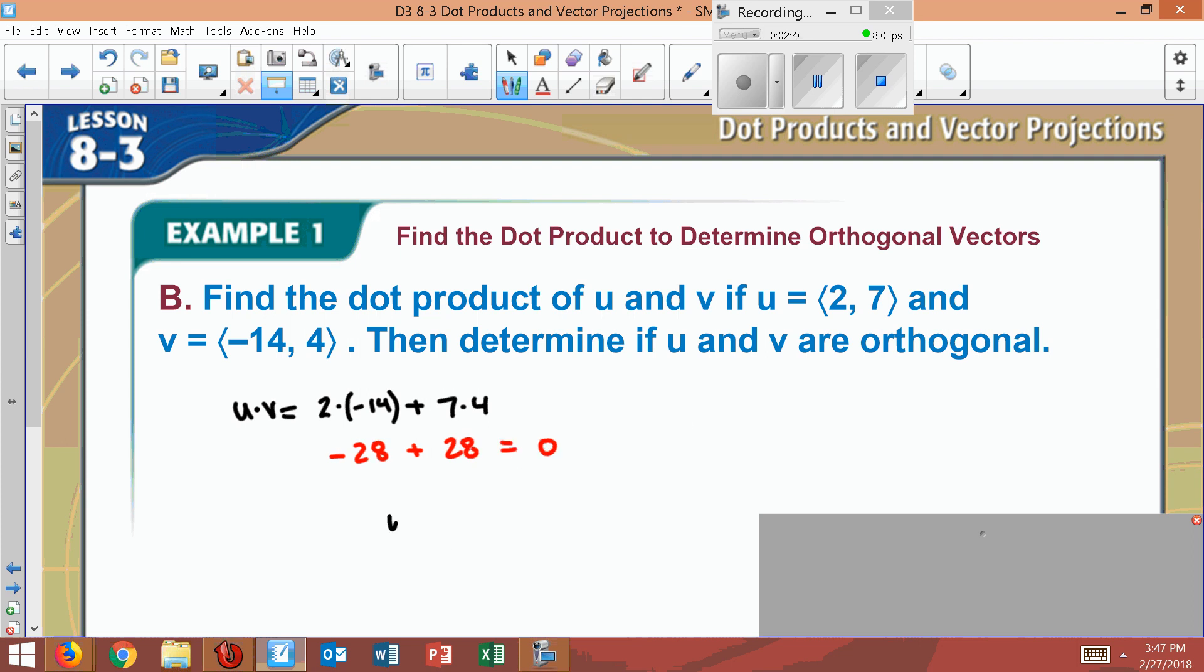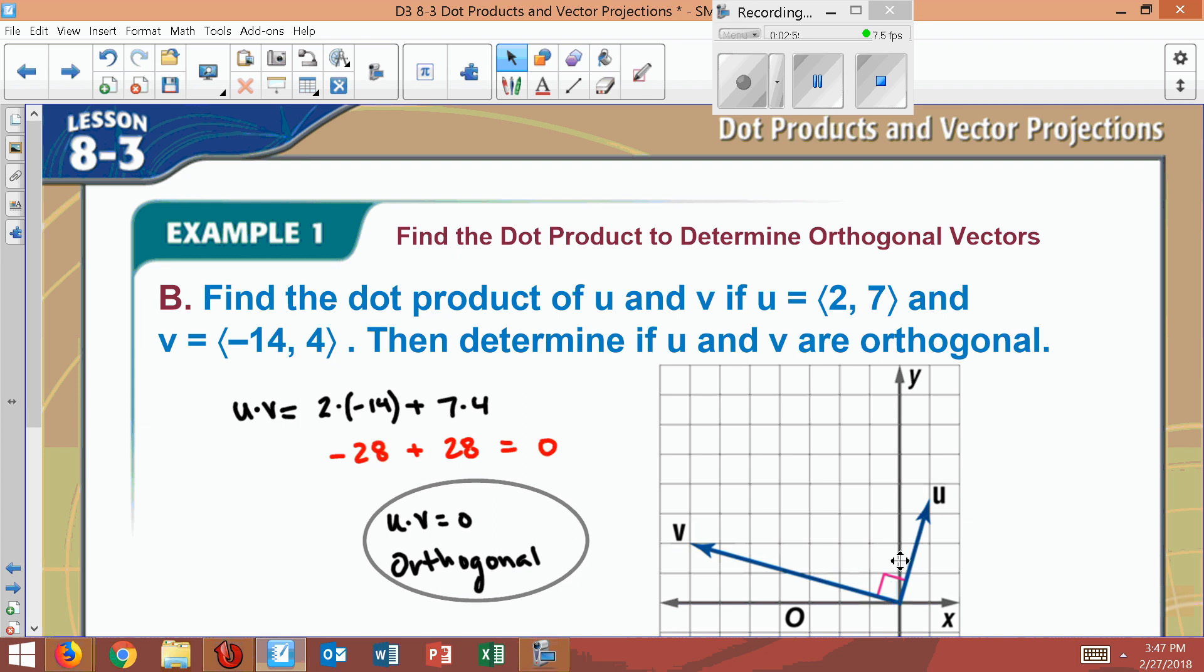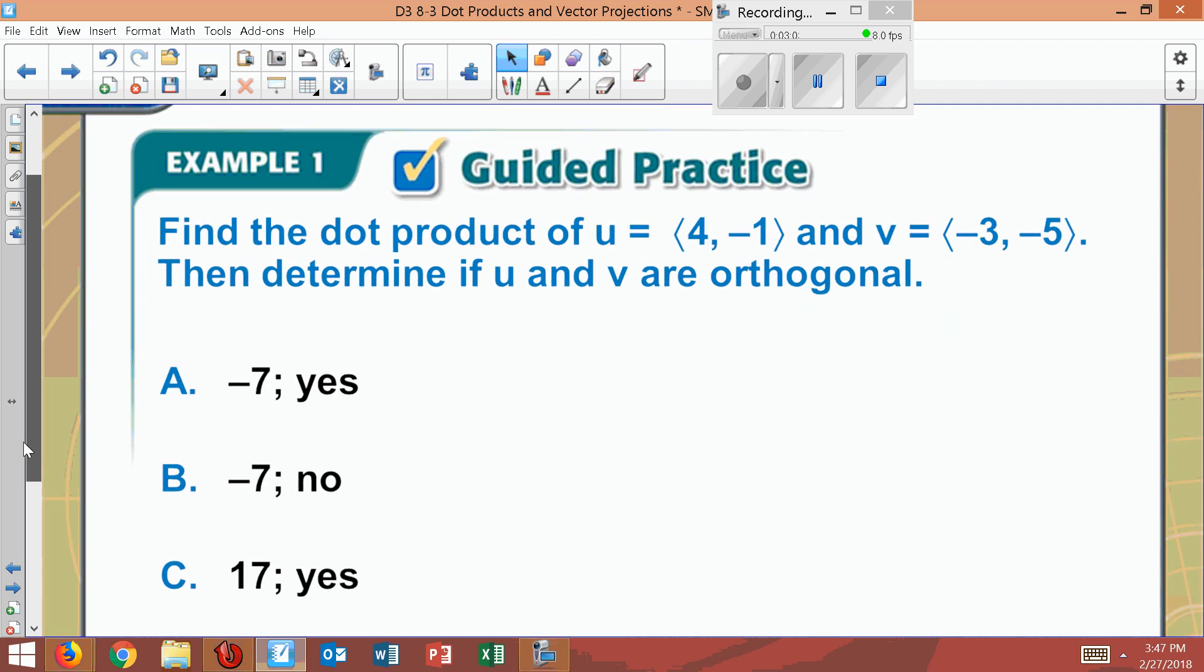So these are orthogonal because it equals 0, which means it better look like a right angle. Otherwise, I've made a mistake. So let's look at the picture. Sure enough, this time, they are a right angle. So here's now one for you to try.